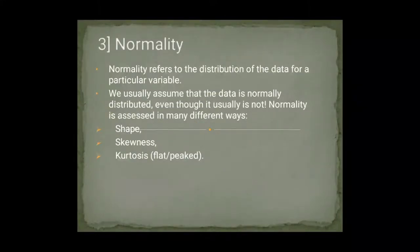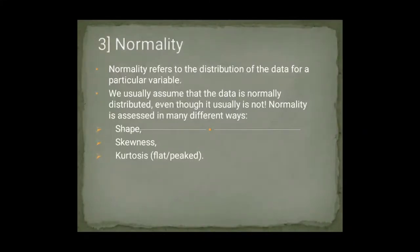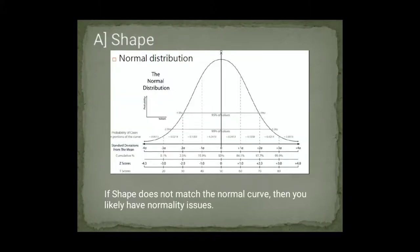The third element is normality. Normality is a distribution of data for a particular variable — what the distribution of data is for a particular variable. Normally we assume normal distribution for data. If it is not so, we still assume normal distribution. The ways to assess normality are: we can assess it from shape, we can assess it from skewness, and we can assess it from kurtosis. If the shape of normal distribution matches our variable's data set, then we will think that our variable is normally distributed. But if that curve doesn't match, then there is a normality distribution issue.